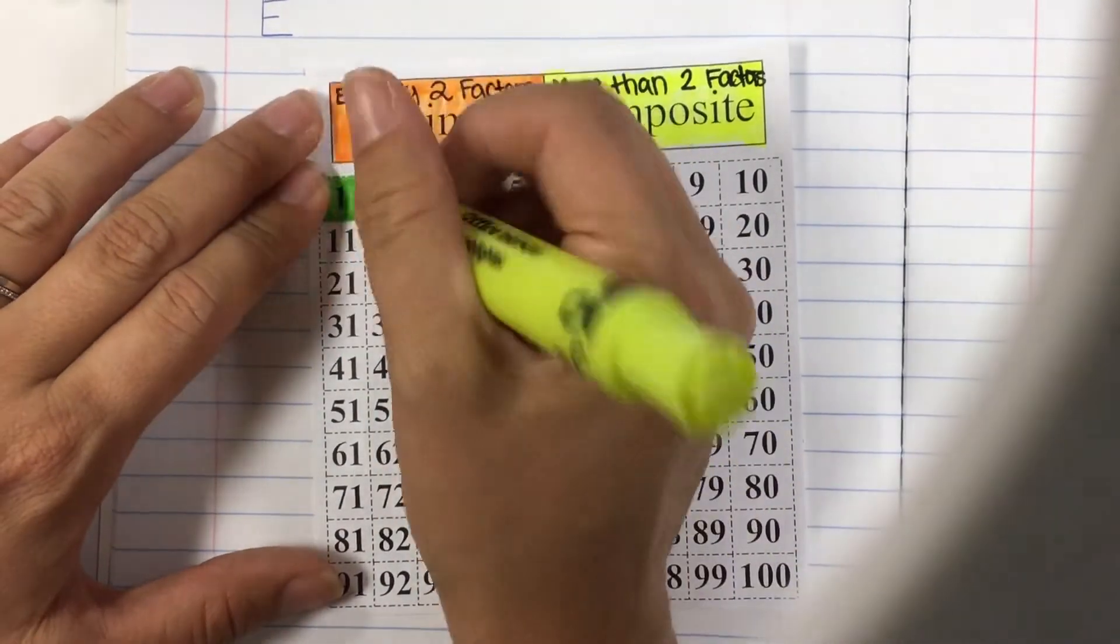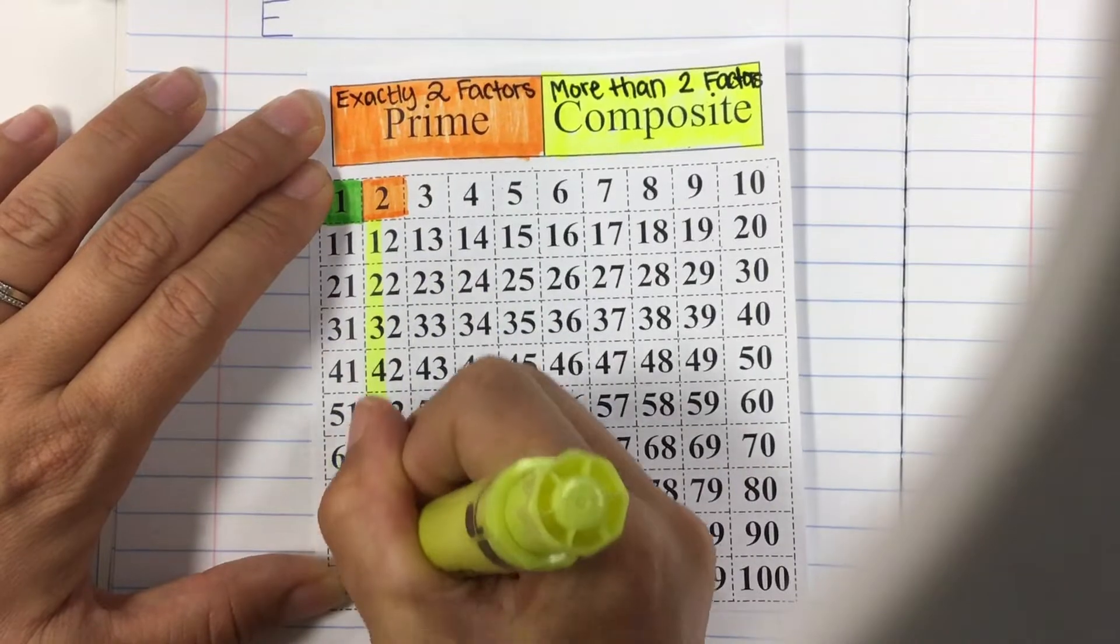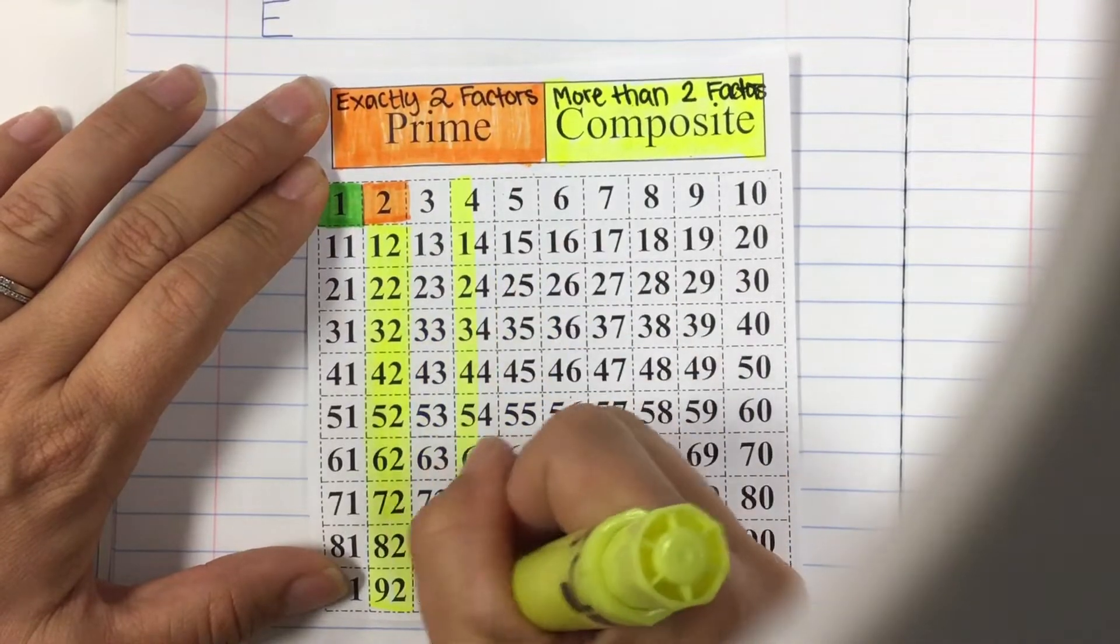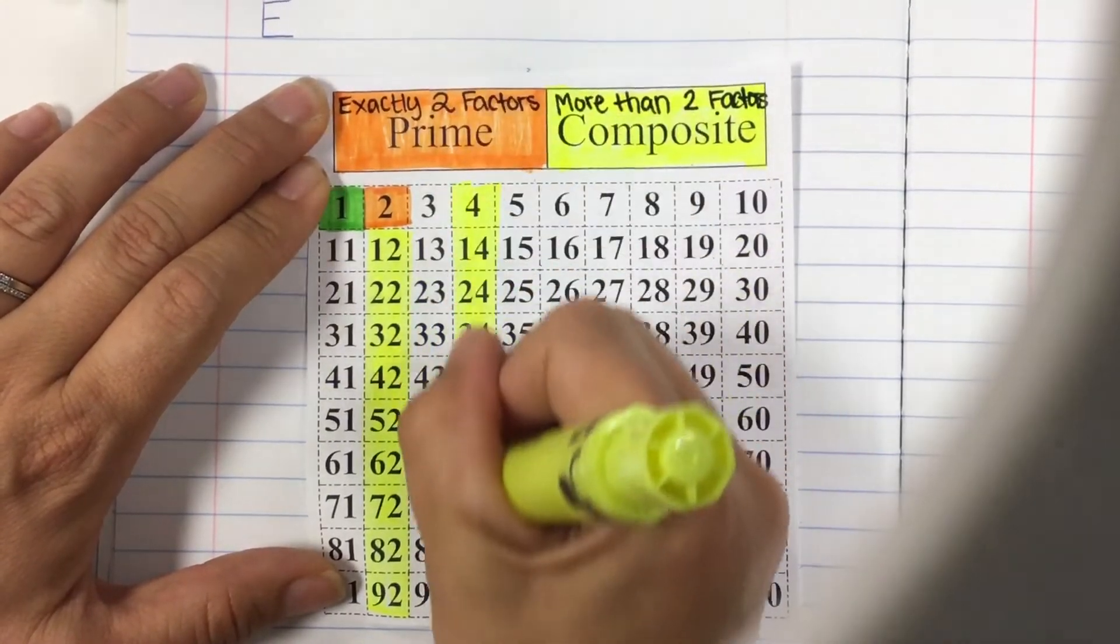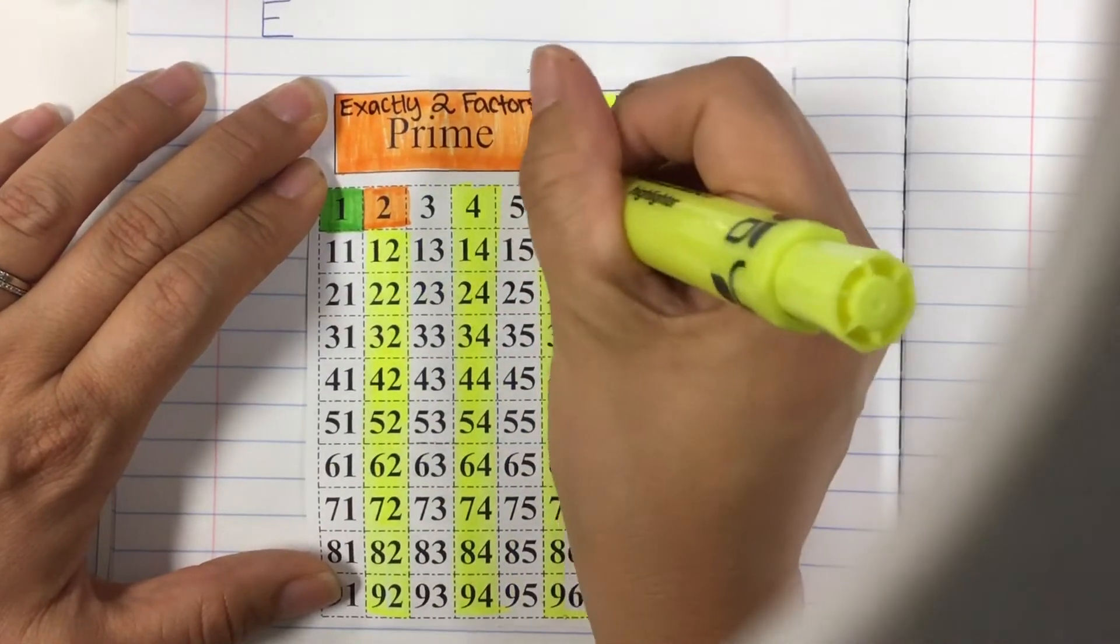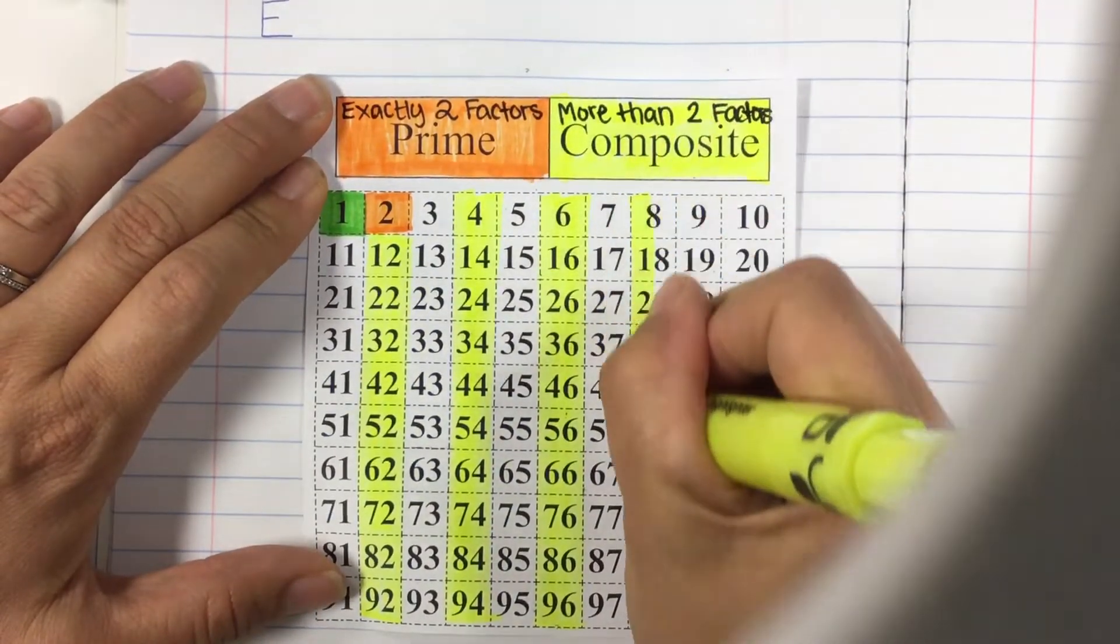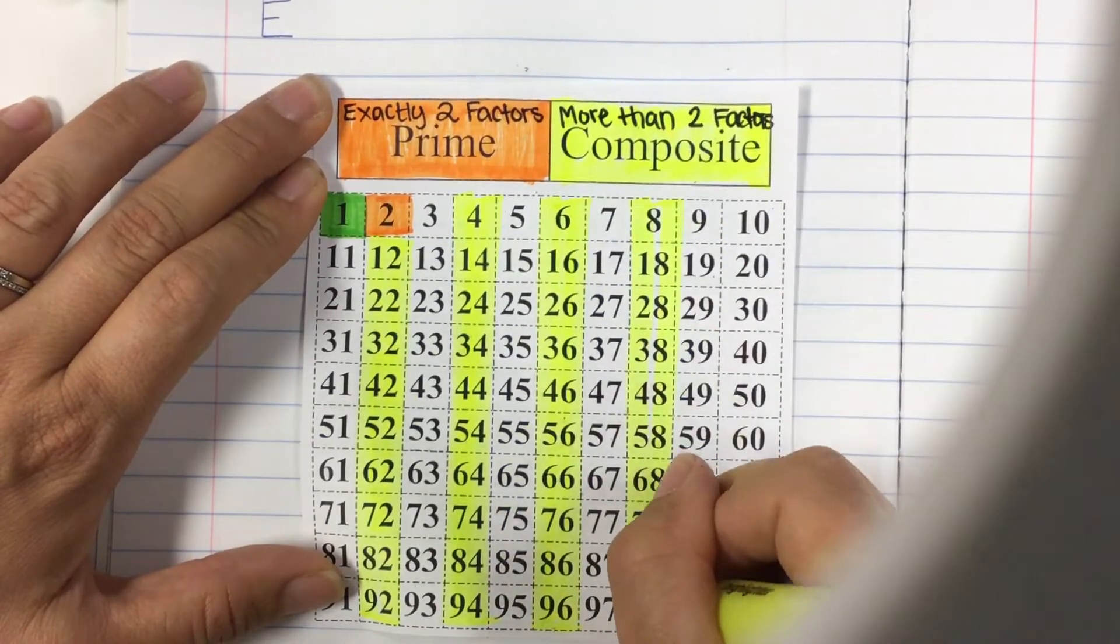I'm going to use my yellow because that's my composite. Anything that ends in a 2, 4, 6, 8, or 0 is composite because it is divisible by 2 as well as one and itself. And of course it can have other numbers it's divisible by but this makes it really nice and easy because we can just go down the line and highlight anything that ends in a 2, 4, 6, 8, or 0. These all have a factor of 2. Therefore they cannot be prime.